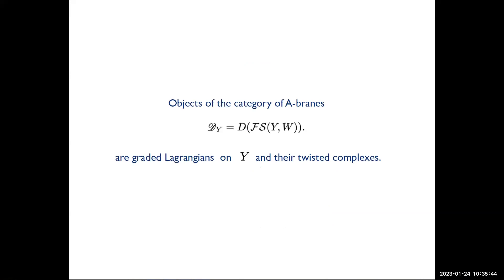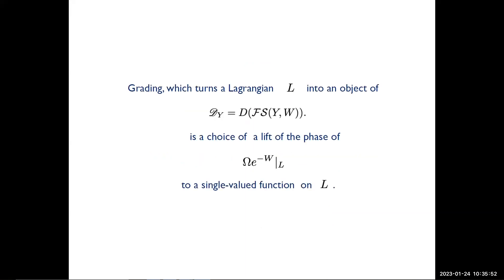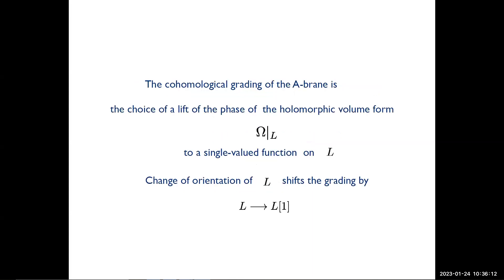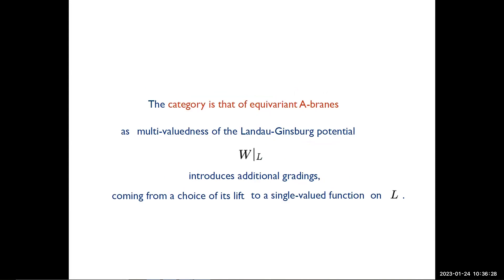The objects of the category are graded Lagrangians on Y and, more generally, twisted complexes over them. The grading, which turns a Lagrangian on Y into an object of the category, is a choice of a lift of the phase of this function to a single-valued function on L. The cohomological grading of the A-brane is a choice of a lift of the phase of the holomorphic volume. In particular, the change of orientation of L shifts the grading by one. The category is that of equivariant A-branes because the multi-valuedness of the Landau-Ginzburg potential introduces additional gradings in the theory.